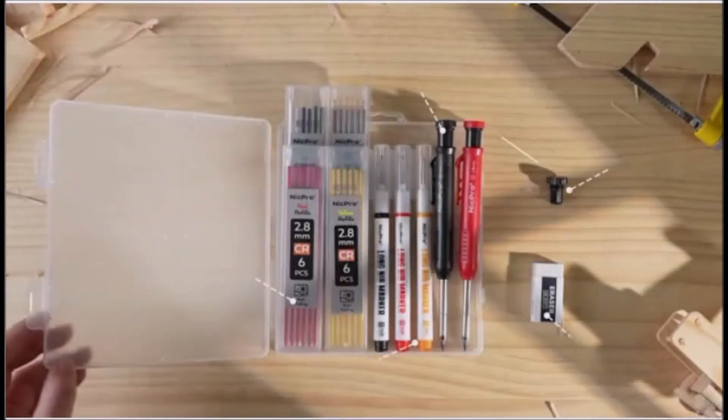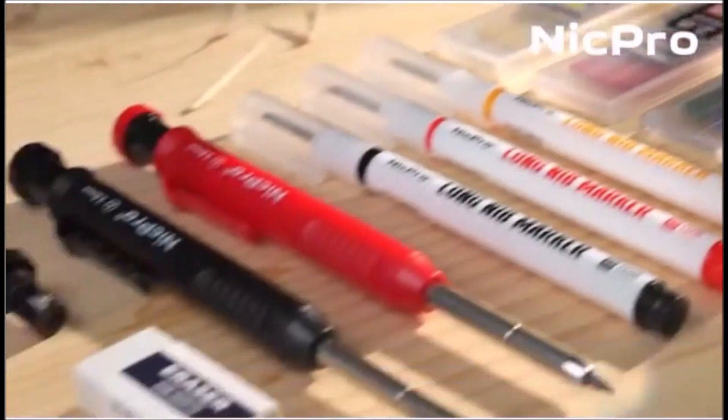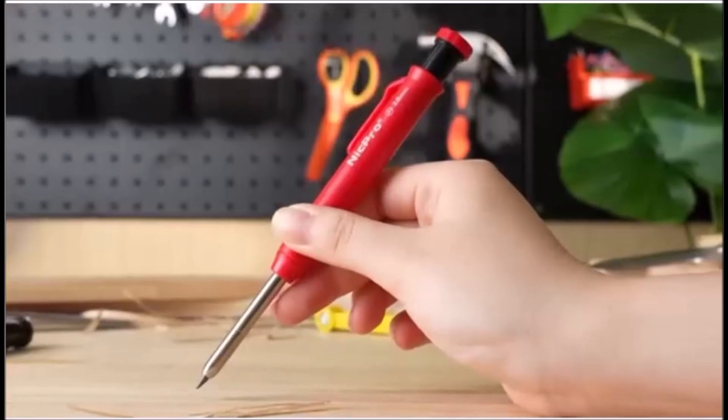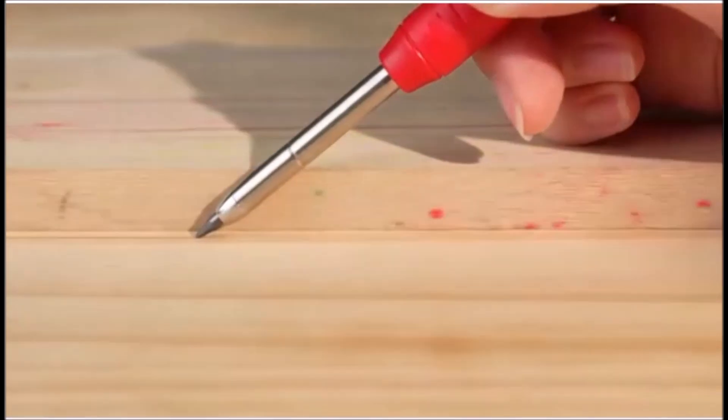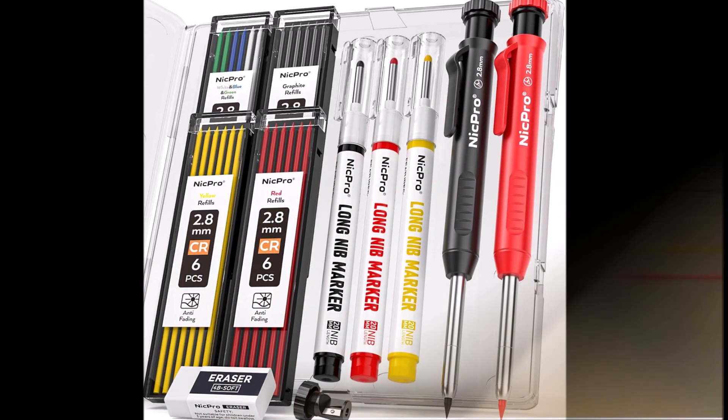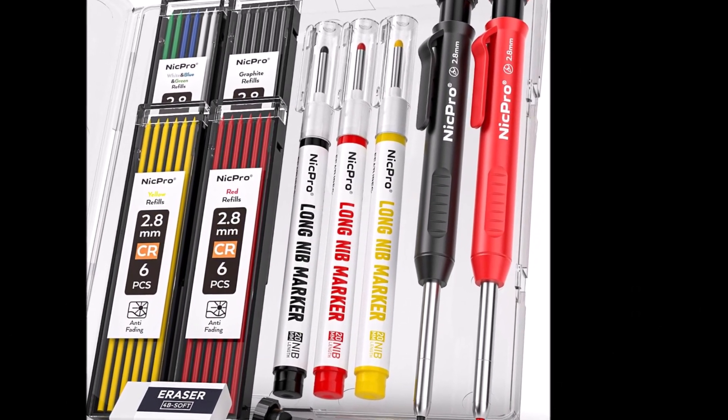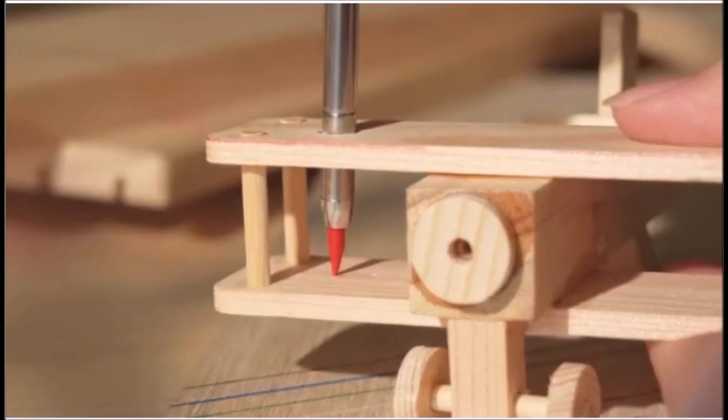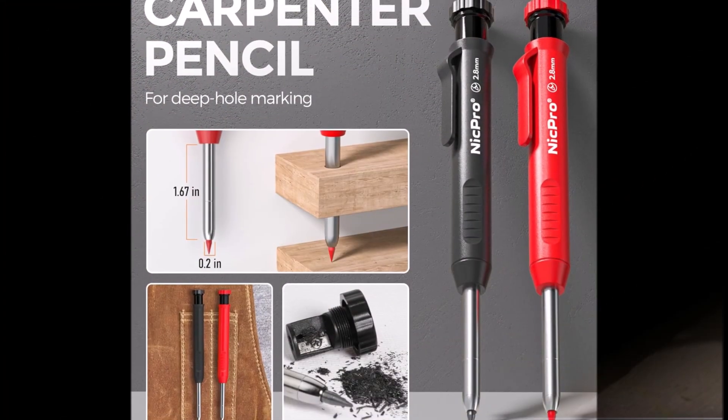Number eight. The Nicbro CP1000 Carpenter Pencil Set is built for precision marking in tough job site conditions. Each mechanical pencil features a 45mm long nib that reaches deep into narrow holes and tight gaps, ideal for marking spots that standard pencils can't access. The 2.8mm solid lead is thick and durable, making clean marks on wood, metal, plastic, concrete, and even wet surfaces.